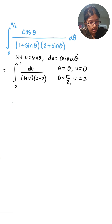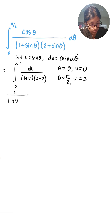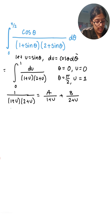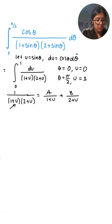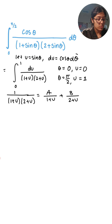Now I'm going to apply partial fractions. As a quick refresher, partial fractions says that I have one fraction on the left and those same factors on the right side separated by a plus sign — A over (1+u) plus B over (2+u). I have to find A and B such that the left and right sides are equal to each other.